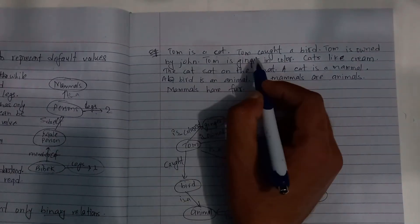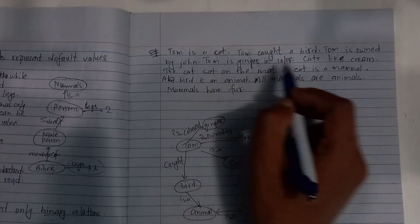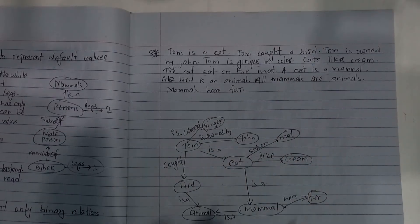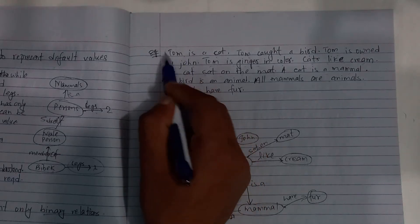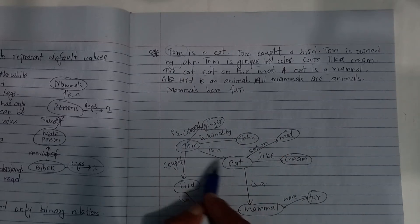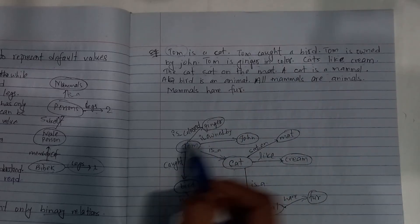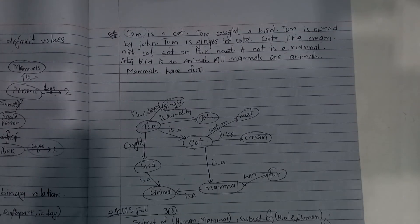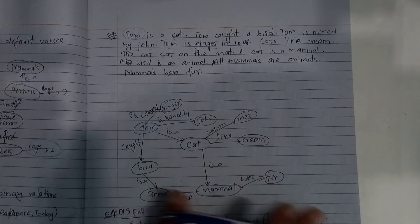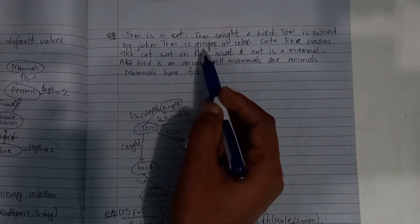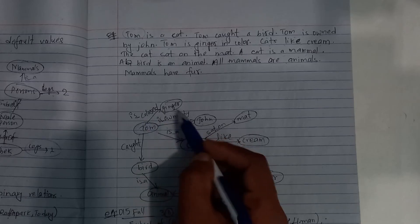For example: Tom is a cat. Tom caught a bird. Tom is owned by John. Tom is ginger in color. Cats like cream. The cat sat on the mat. Cat is a mammal. To represent this, Tom is a node, cat is another node, bird is a node, and we connect them with relationships.